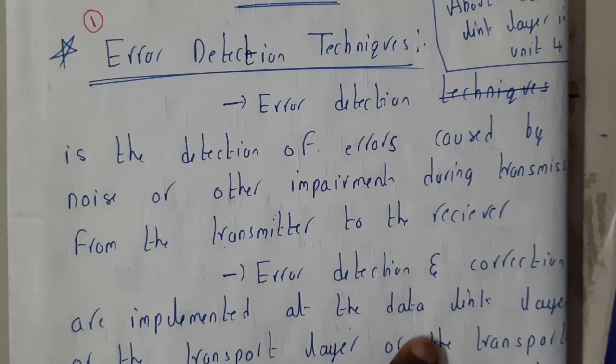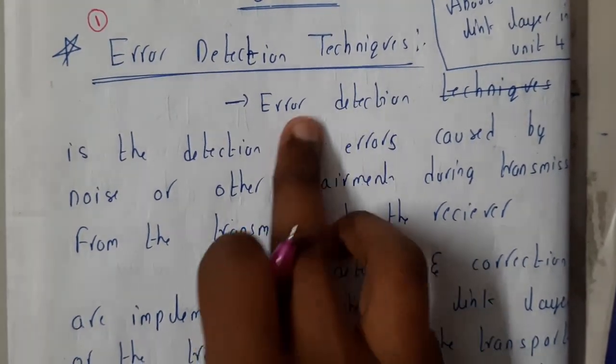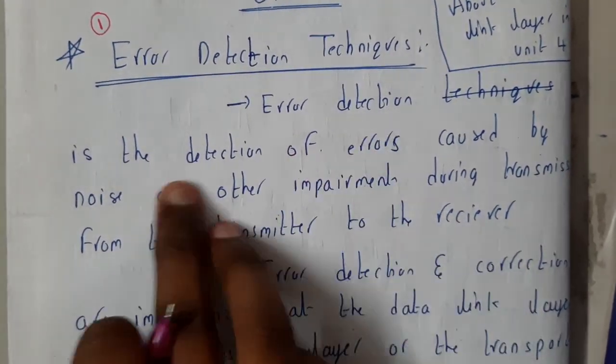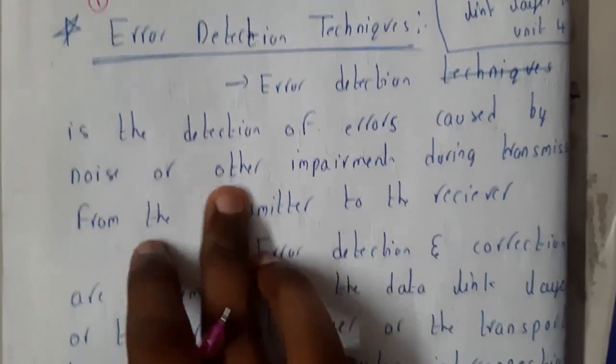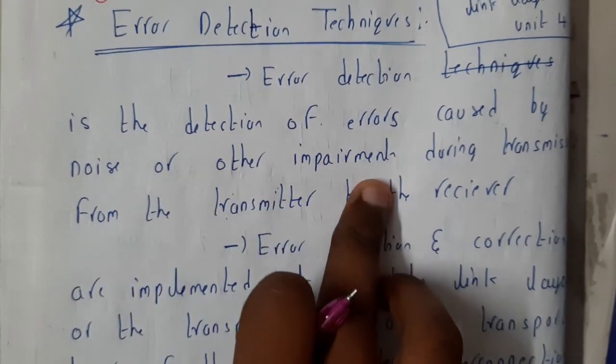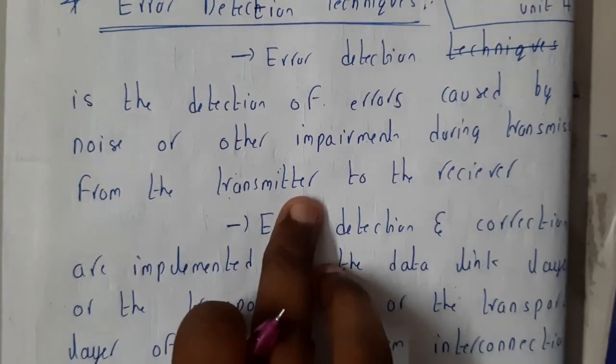Error detection and techniques: first let us go through error detection. Error detection is the detection of errors caused by noise or other impairment during transmission from the transmitter to the receiver.